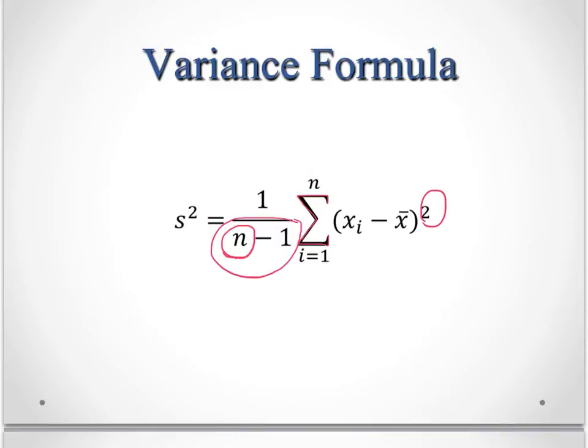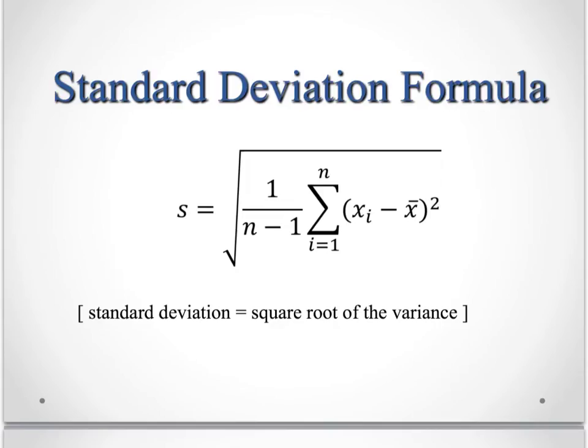And then you would take all of that and divide the whole thing by n minus 1. And that gives us a number that we call the variance.